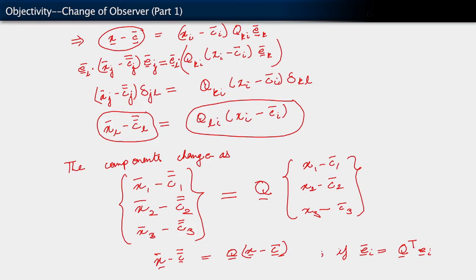When the basis transforms as e bar i equals q transpose ei. And then you observe that what we have here, we can always rewrite as, we can always write, x bar minus c double bar, remembering that these are the vector of components, is equal to q x minus, or plus, yet another vector c, where this vector c is essentially minus q c bar.